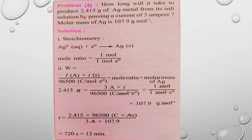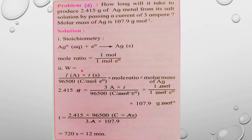The mass of the product — silver metal — is 2.415 grams. The reduction reaction is: Ag⁺ + e⁻ → Ag. The mole ratio is 1 mole of silver per 1 mole of electrons. Here, W means the mass of the product, and I means the electric current in amperes.